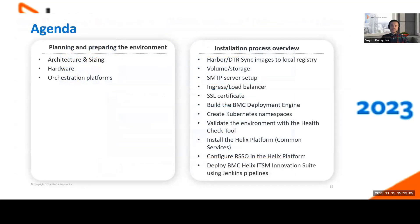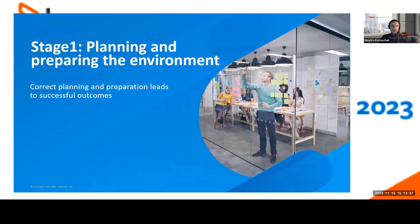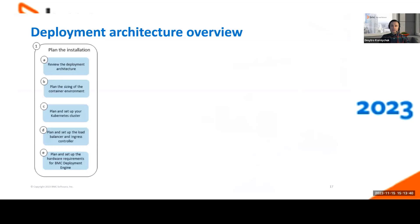Today in this session, we will provide a quick overview on how to plan and prepare for the successful deployment of BMC Helix Service Management on-premises, as well as the installation steps for containers running on the Kubernetes platform. As Murali mentioned previously, we'll be covering stage one — planning and preparing for the environment — as well as stage two — the installation process overview. For the stage one deployment flow, we suggest following this sequence: plan the installation, prepare for the installation, perform the Helix Service Management platform installation, and then the ITSM suite.